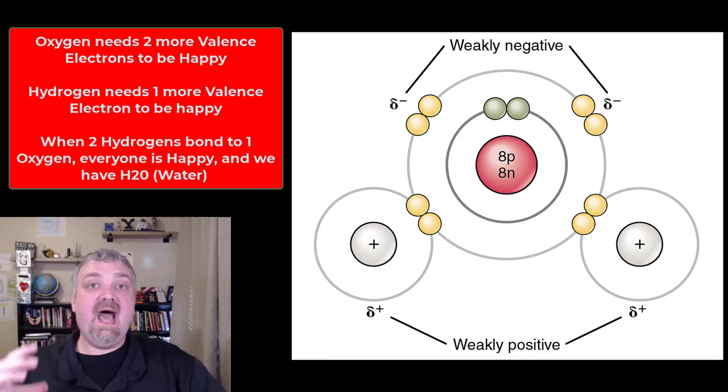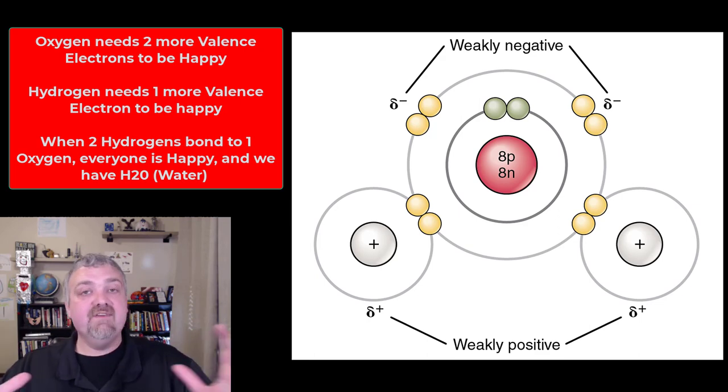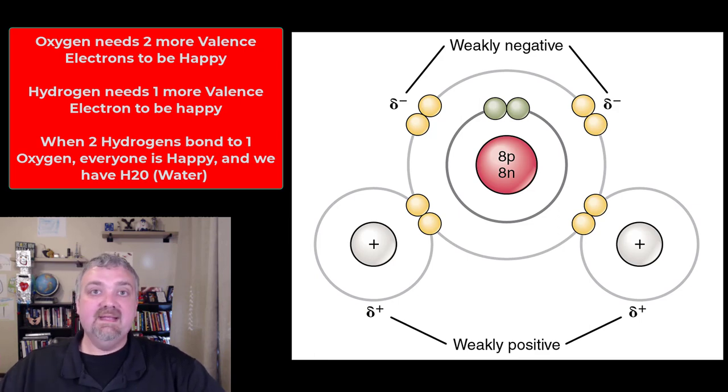Another important term to note is the octet rule, because any atom is going to gain, lose, or share electrons to make its outer shell full. And every outer shell, except for that first one there, wants eight electrons, which is why it's called the octet rule. Let's see how this matters in the real world.